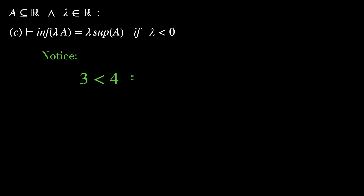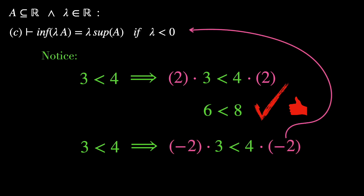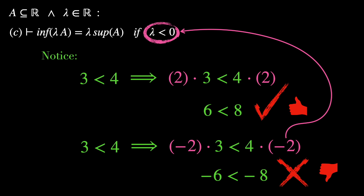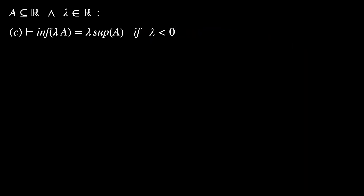The fact that 3 is less than 4 means that multiplying both sides by 2 still gives 6 less than 8 — the inequality holds. However, multiplying both sides by minus 2 does not give minus 6 less than minus 8; that would be wrong. The point is that lambda is negative, so we need to invert the inequality symbol after multiplying by a negative number — the less-than sign becomes a greater-than sign, giving minus 6 greater than minus 8, which is true. We'll have to do something similar throughout this proof.